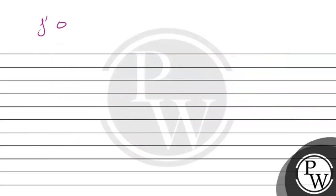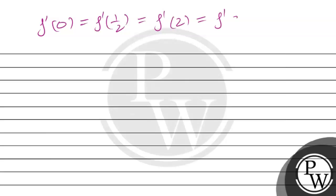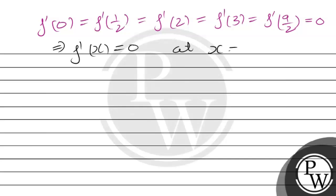From the given question, f'(0) = f'(1/2) = f'(2) = f'(3) = f'(9/2) = 0. This implies f'(x) = 0 at x = 0, 1/2, 2, 3, and 9/2. So we have confirmed 5 zeros of f'(x). Now we check whether more zeros exist.